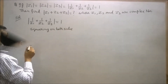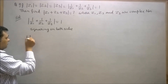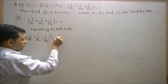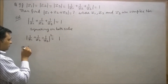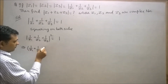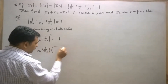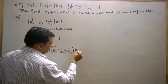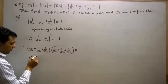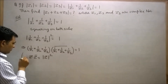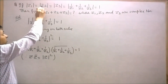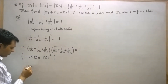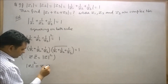The square of 1 is always 1, which implies that (1/z1 + 1/z2 + 1/z3) multiplied by the conjugate of (1/z1 + 1/z2 + 1/z3) equals 1. We know that z times z-bar equals the square of the modulus of z.